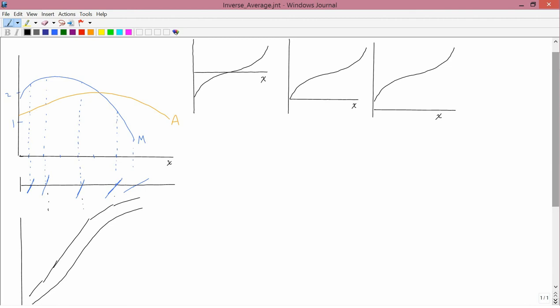In the last lesson, having gotten the general shape of the f of x function, which would be this, from the marginal, we were left with three possibilities. I've slightly redrawn them on the upper right. I can label them 1, 2, and 3.